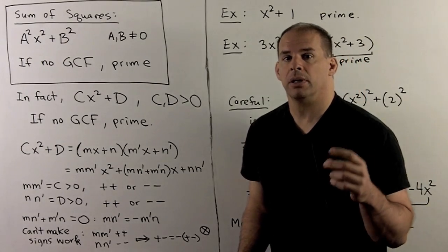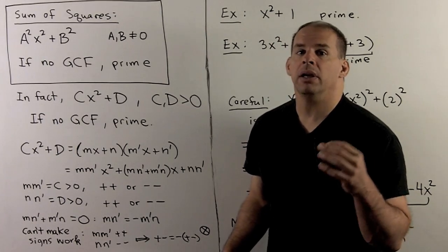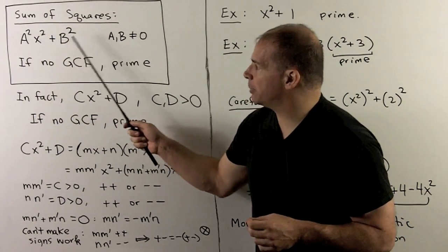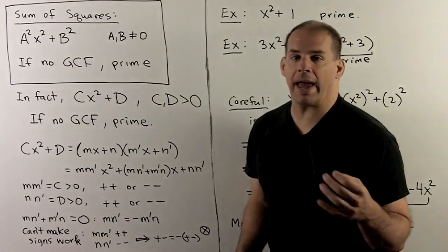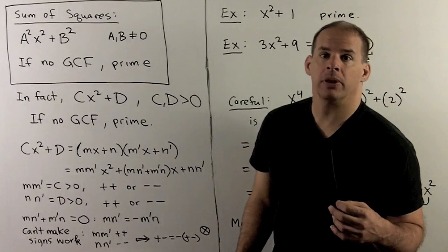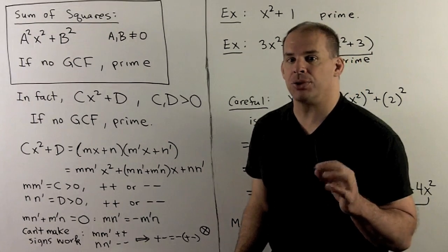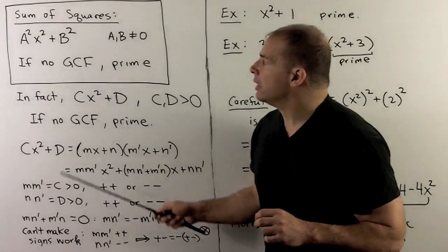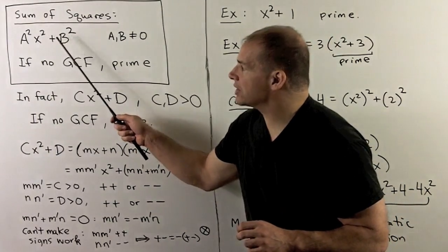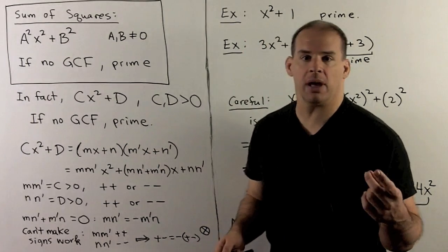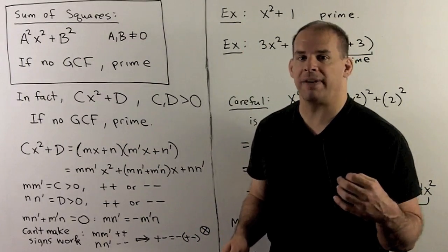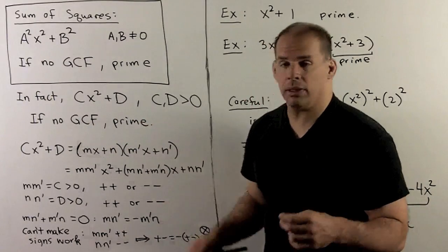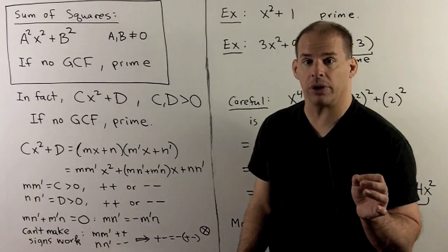Next case: sum of squares. A quadratic in the form a²x² + b², where a and b are non-zero, looks a lot like difference of two squares, but the situation is very different. If we change the minus sign to a plus, the result is that — if there's no greatest common factor — the quadratic is prime, meaning we cannot factor it any further.